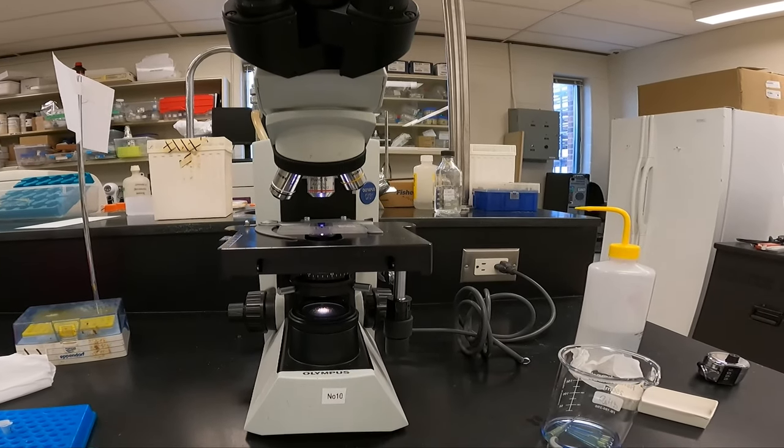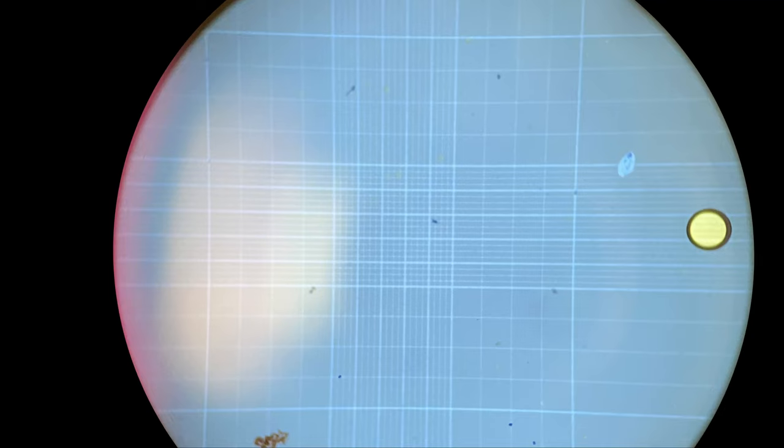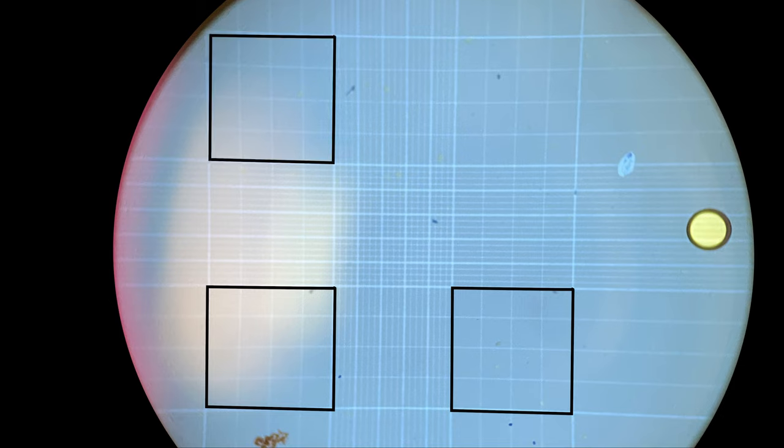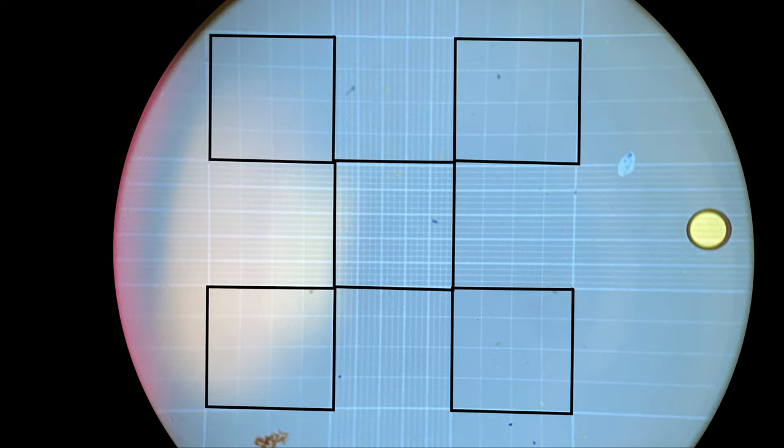There is a laser etched grid on both sides of the hemocytometer. If you look at it on low power, we can see nine P-squares. One, two, three, four, five. We'll count these five P-squares on each side of the hemocytometer. Notice the corners are four by four grids. The middle is five by five.